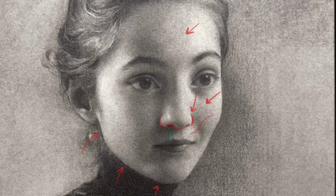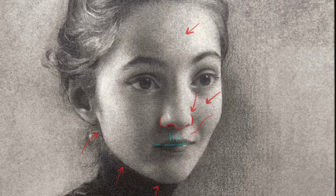We have two different kinds of transitions at the lips: a softer transitional edge in between values, and then we heighten that edge by pushing a crisp delineation that gives us that form-ending edge — showing the end of the upper lip and the beginning of the lower lip.